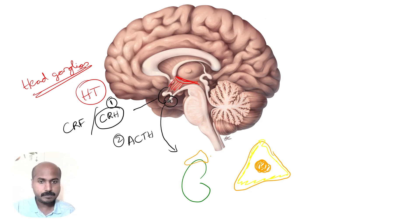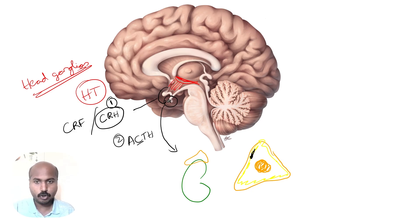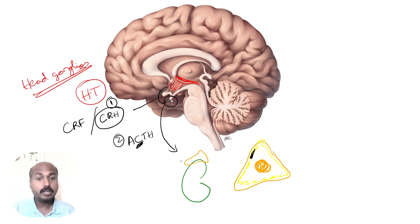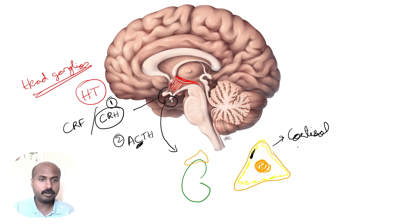ACTH specifically acts on the cortical aspect of the adrenal gland — that is why it is called adrenocorticotrophic hormone. The cortex secretes the hormone cortisol, which is released during acute stress.